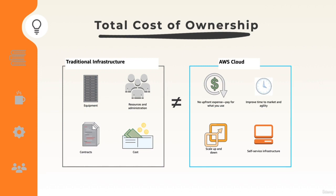Let us move on to Total Cost of Ownership. The TCO is a financial estimate to help identify the direct and indirect costs of a system. If a customer wants to migrate to the cloud, you can use the TCO calculator to give a side-by-side comparison between running a system in a data center versus running it in AWS cloud. The TCO compares the cost of running an entire infrastructure or specific workload on-premises versus on AWS.